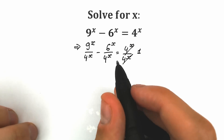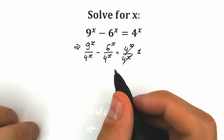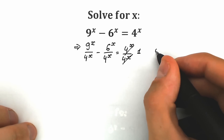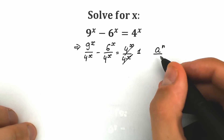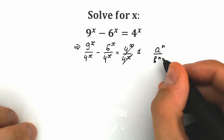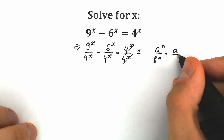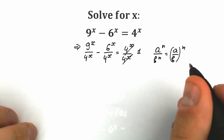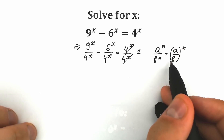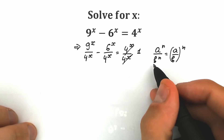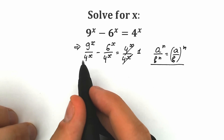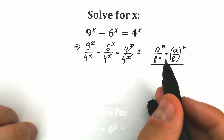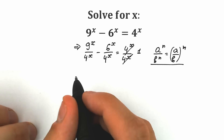Before writing our first step, let's remember a really great property: if we have a to the n divided by b to the n, this equals (a over b) to the power n. In other words, if we have different bases but the same power, we can write it in one parenthesis. We're going to apply this rule to simplify our expression.